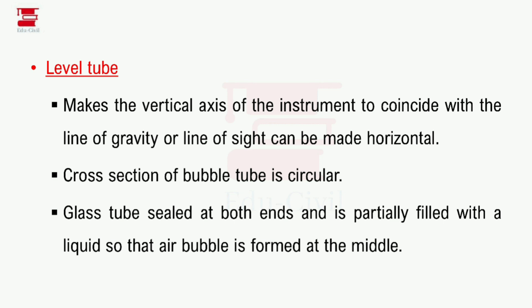The glass tube is partially filled with liquid so that an air bubble is formed in the middle. If the air bubble is in the middle, the instrument is level. If the air bubble is centered, the line of sight is horizontal.